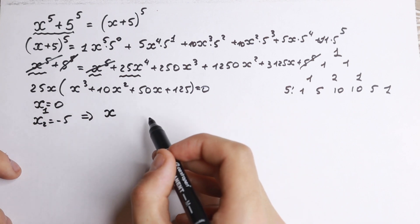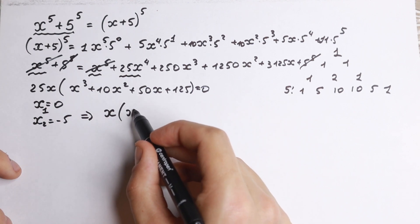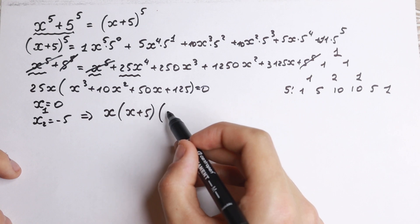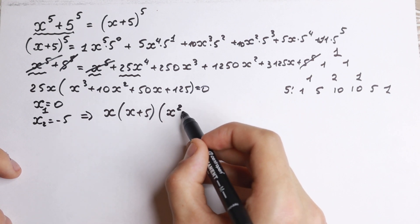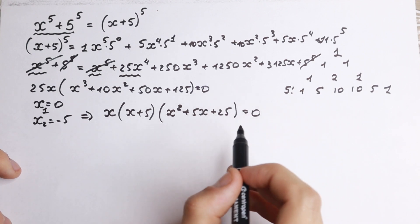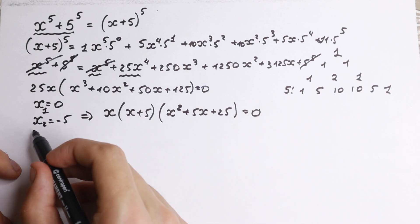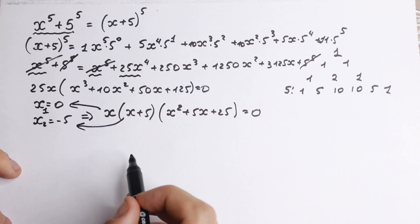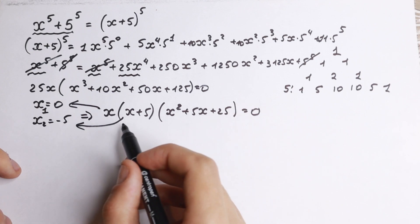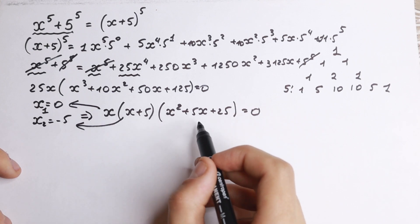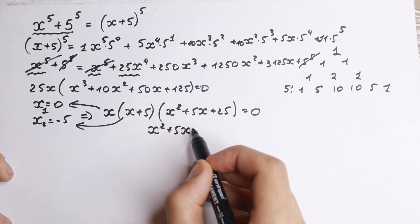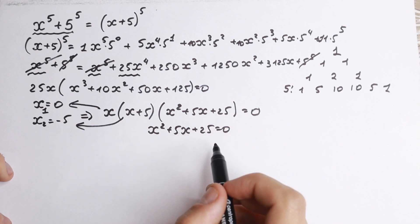We need x equals minus 5 because we can factor it out of the cubic. This x can be written as x, and the root minus 5 means we factor out x plus 5. Factoring x plus 5 from the cubic x cubed plus 10x squared plus 50x plus 125, we get the second factor x squared plus 5x plus 25, equal to 0. So we now have two roots from x and x plus 5, and the quadratic x squared plus 5x plus 25 still needs to be solved.